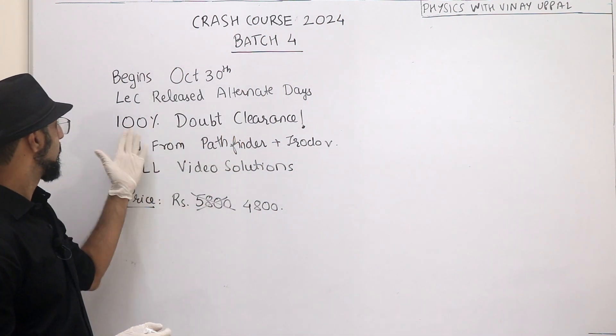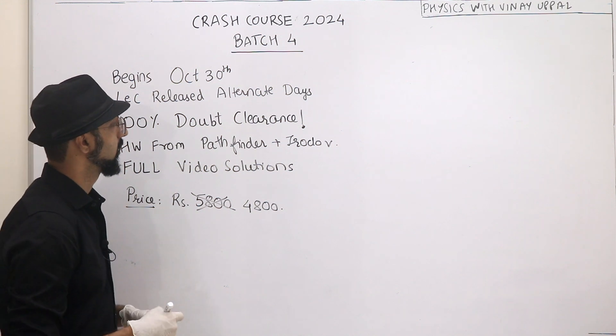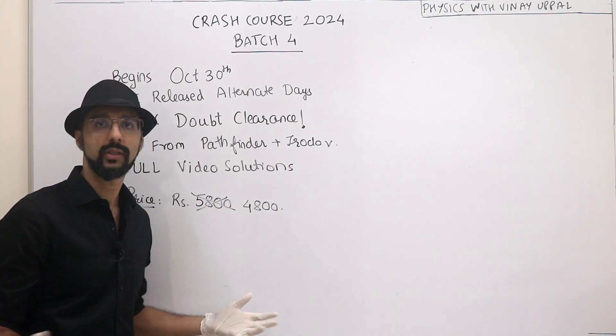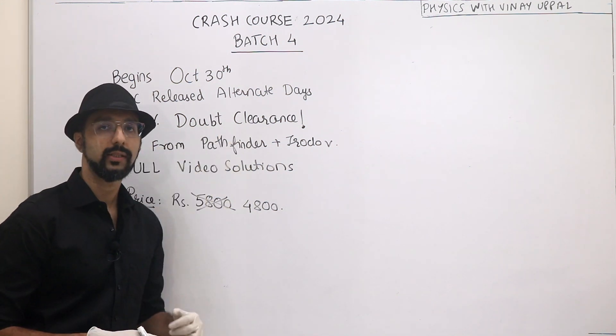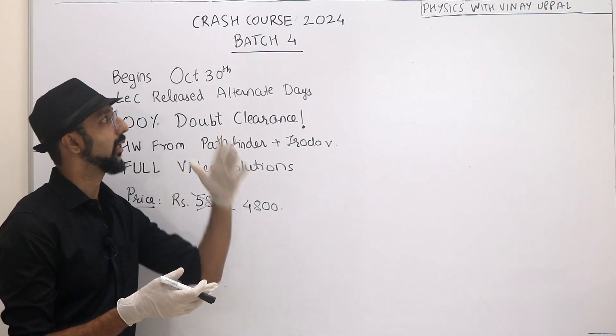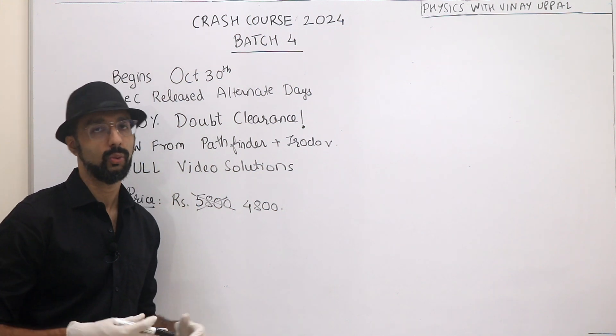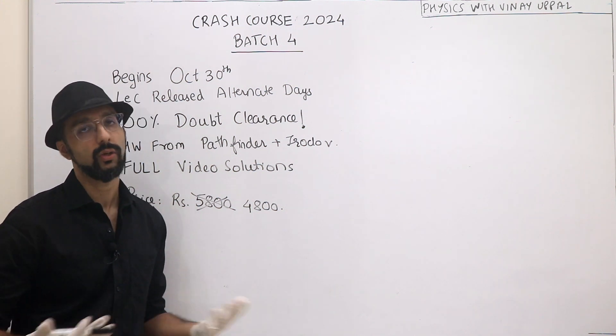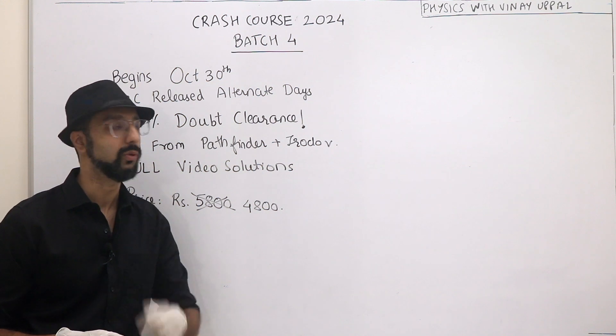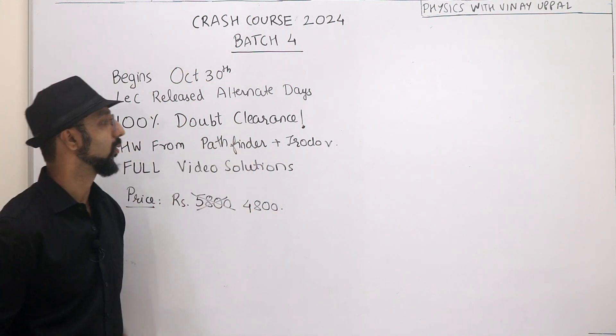There are some things which are valid for all my courses: 100% doubt clearance in all my courses, whether it is crash course Batch 4, Batch 3, or full syllabus course 2025. Students who are enrolled in my courses know that I clear their doubts. Every single doubt is done, 100% doubt clearance.